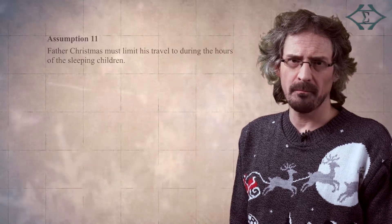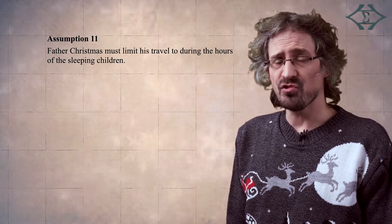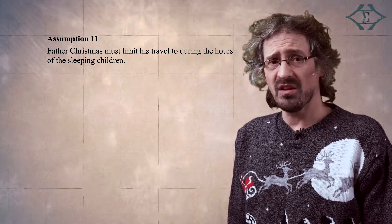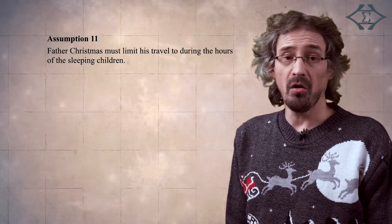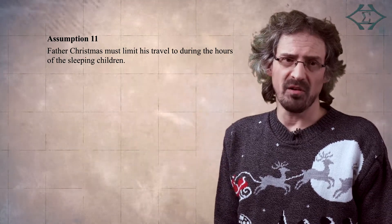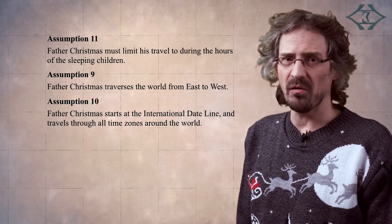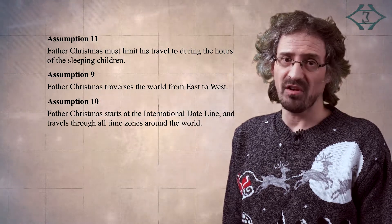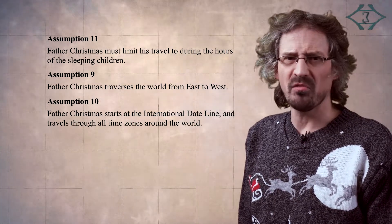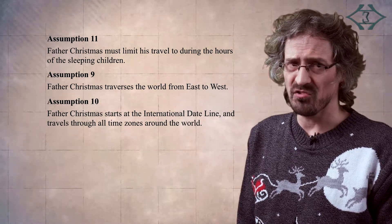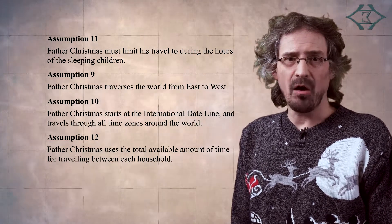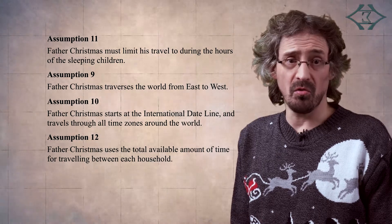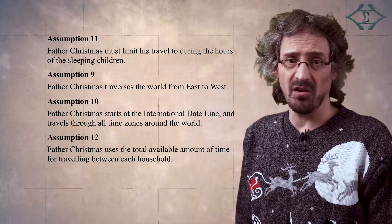It remains to determine an estimate for the total amount of time for Father Christmas's journey around the world. By Assumption 11, Father Christmas limits his travel to during the hours of the sleeping children. This needs to be considered for each time zone, but in each case will likely start from the latest bedtime on Christmas Eve to the earliest rise on Christmas morning. In addition, Assumptions 9 and 10 allow for an extra 24 hours by starting at the International Date Line and travelling from east to west, providing the maximum available time. We thus divide our estimated total distance travelled by the total available travel time to obtain an estimate of the average speed of Santa's sleigh.